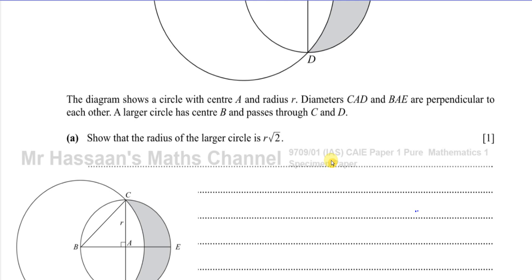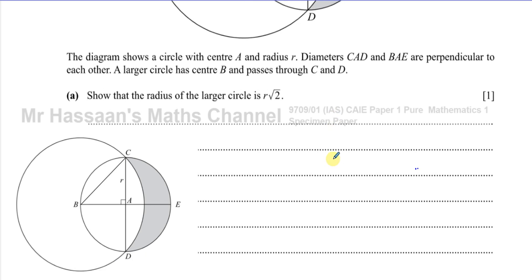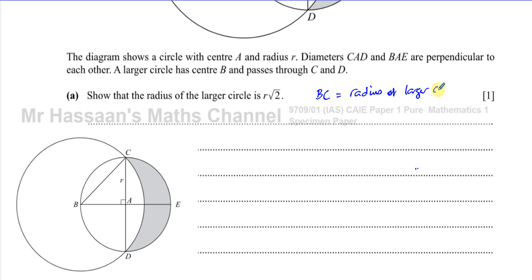Part A says: show that the radius of the larger circle is R root 2. So the radius of the larger circle would be the line BC. We can say that BC is part of this triangle BAC.